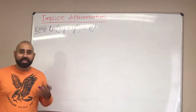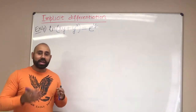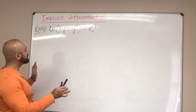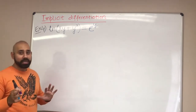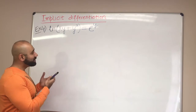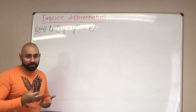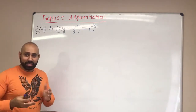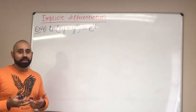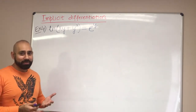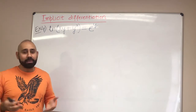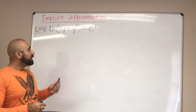We're back with example number four. This is an implicit function where x's and y's are all mixed up. In this example, there's also a log function and an exponential function. Just as we applied implicit differentiation with trig or algebraic functions, we can apply it to logs or exponential functions — really any type of function.